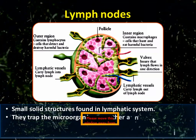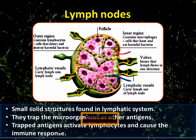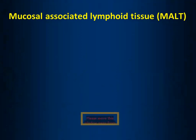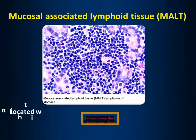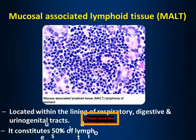Lymph nodes are small solid structures found in the lymphatic system. They trap microorganisms or other antigens. The trapped antigens activate the lymphocytes and cause the immune response. T and B lymphocytes, after maturation, go to different areas of the mucosa layers of the body — the lining of the respiratory, digestive, or urogenital tract — and they constitute about 50% of lymphoid tissue.